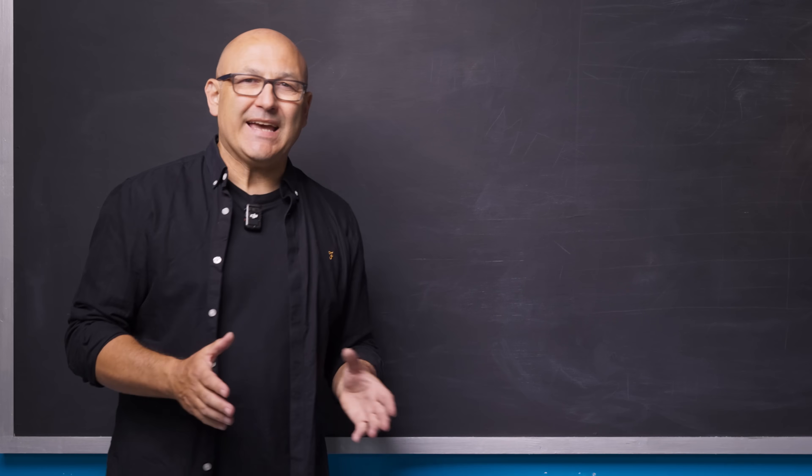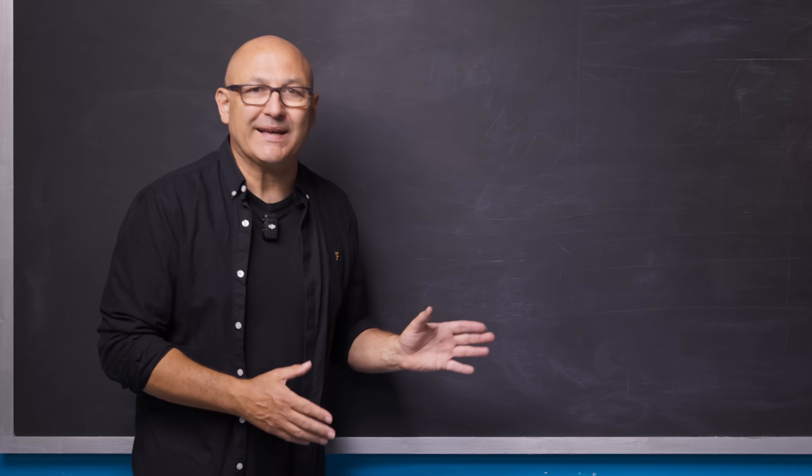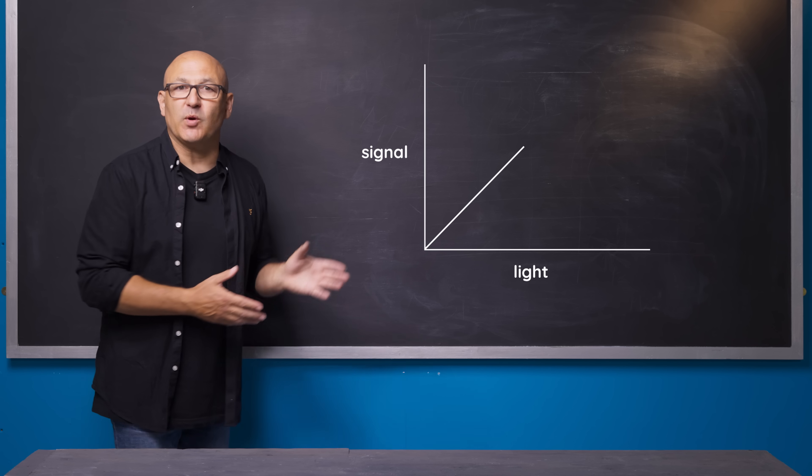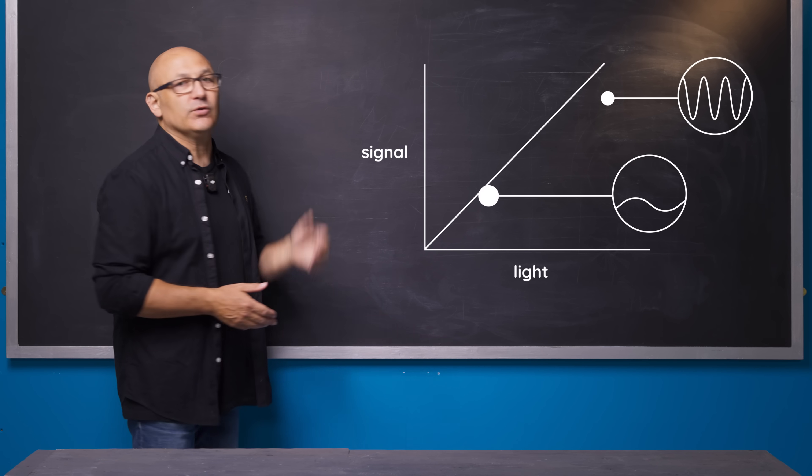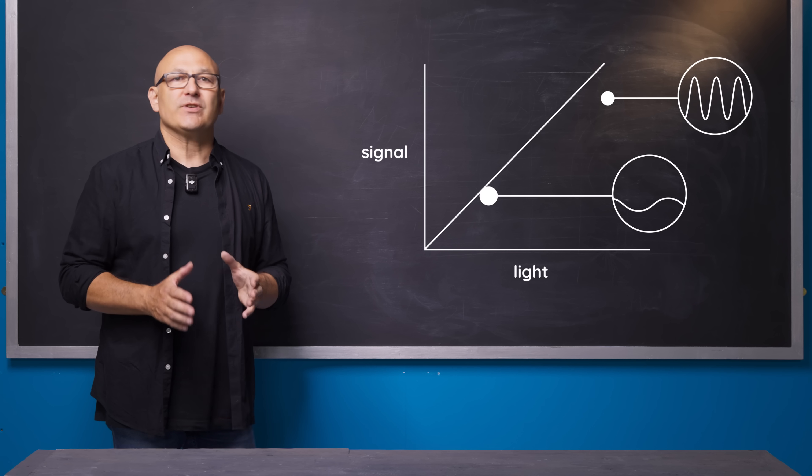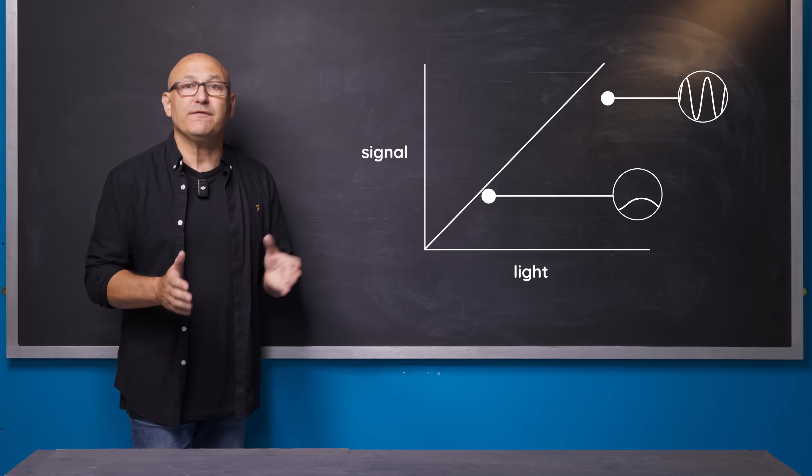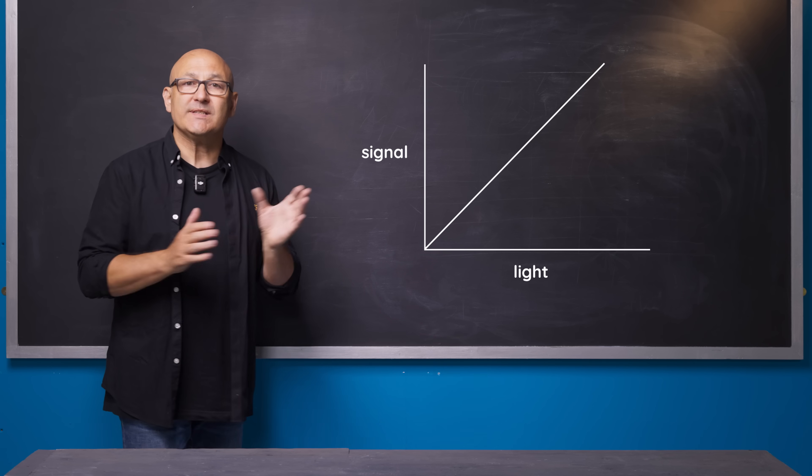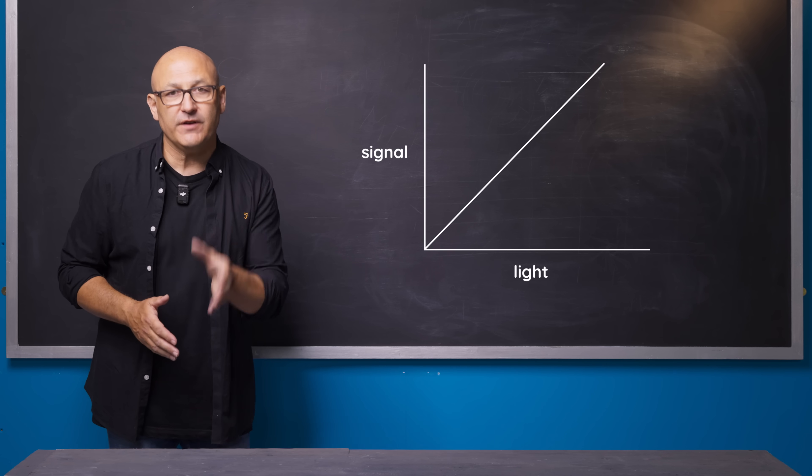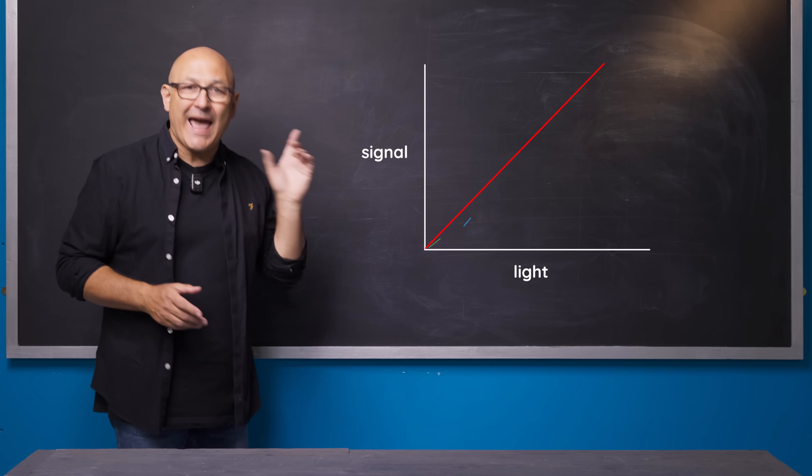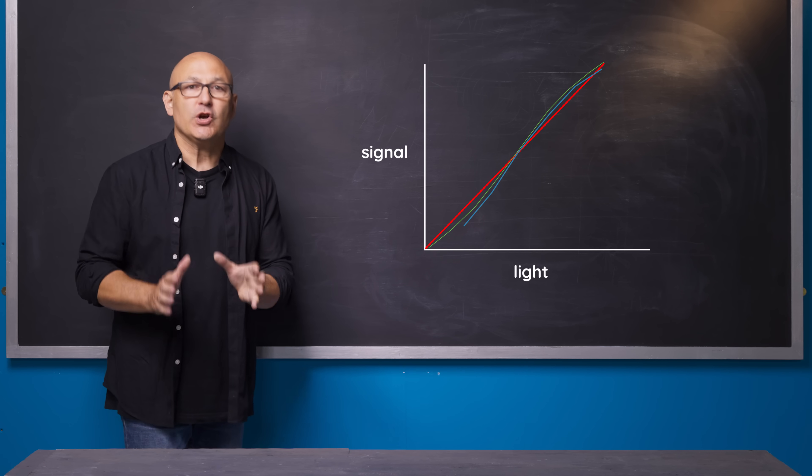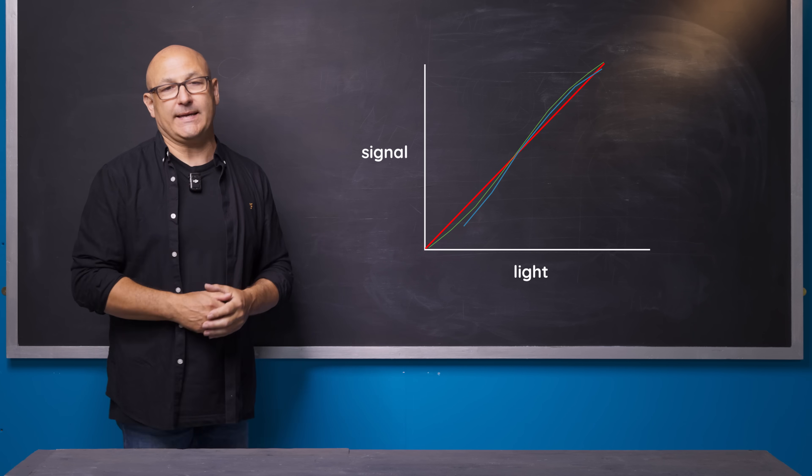The amplification process is also complicated. The sensor response is linearized so that if you double the light, the signal is doubled. Manufacturers also add processing in the form of curves to the signal after the analog to digital converter. Hasselblad, for example, add a small s-curve to make the image more analog and film-like.